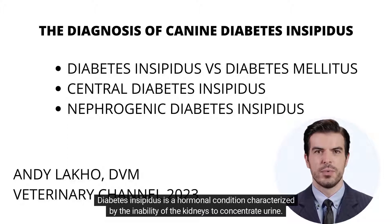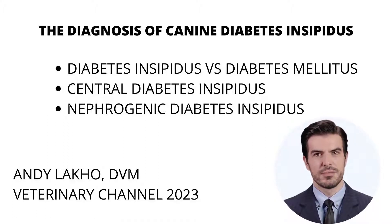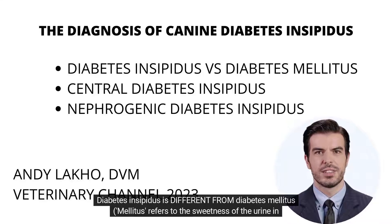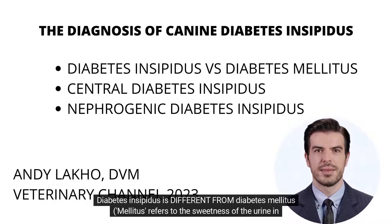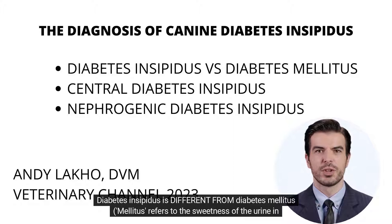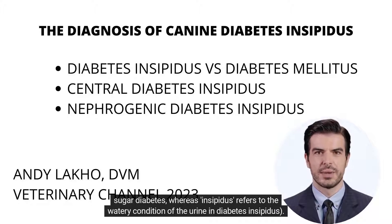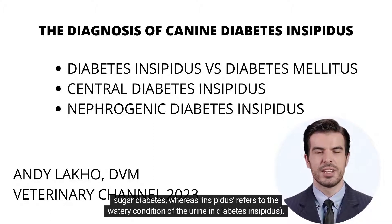Diabetes insipidus is a hormonal condition characterized by the inability of the kidneys to concentrate urine. Diabetes insipidus is different from diabetes mellitus. Mellitus refers to the sweetness of the urine in sugar diabetes, whereas insipidus refers to the watery condition of the urine in diabetes insipidus.